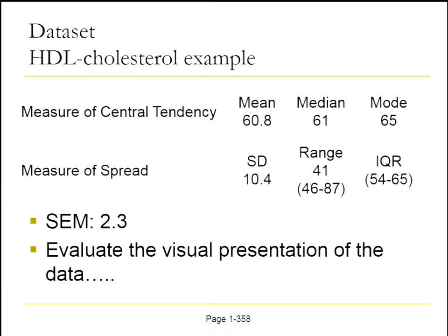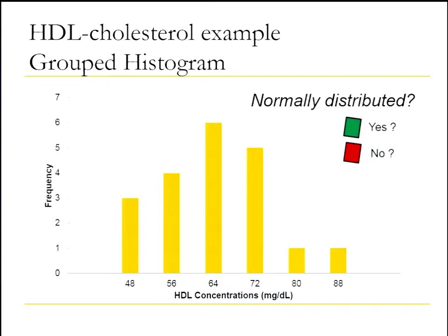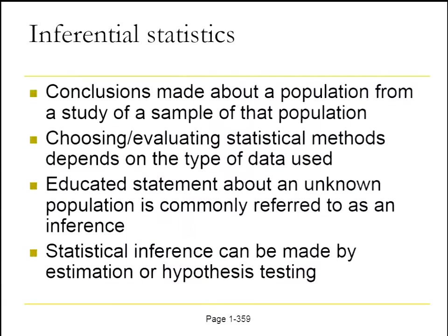Let's evaluate the visual presentation of these data. This is a frequency distribution histogram showing HDL concentrations on the x-axis and frequency of occurrence on the y-axis. We're going to eventually answer the question of whether or not we think this is normally distributed — think in your own mind whether or not it is. We'll come back to that in just a second, and then switch to inferential statistics.